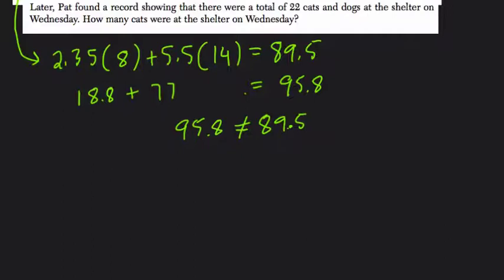Then what's next? Later, Pat found a record showing there were 22 cats and dogs. So how many? Okay, so 22 cats and dogs at the shelter in total between them on Wednesday.